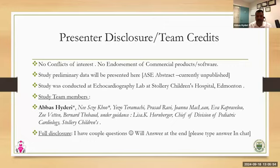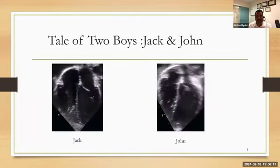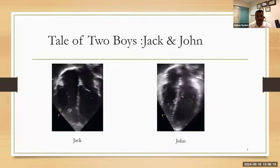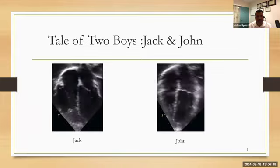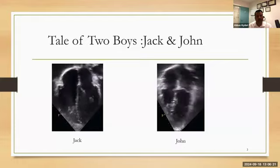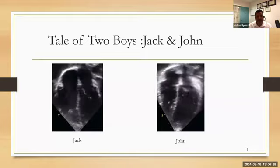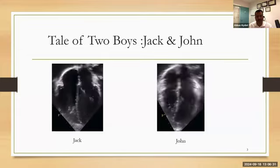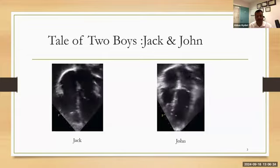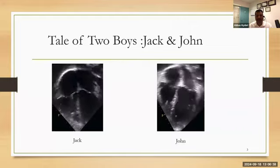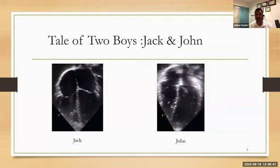These are my team members, and Professor Lisa Hornberger, Chief of Division of Cardiology, is our principal investigator. I'll have a couple of questions along the way, and we'll discuss the answers at the very end. Let's start with a real-life case — these are real patients in our study with names changed: Jack and John. One echo is normal and one is abnormal. The task for you is to detect which is which, and to tell me why you think either Jack or John was abnormal and what you can do about it.